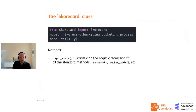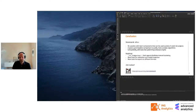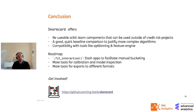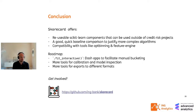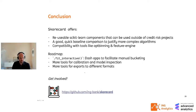To conclude: scorecard is open sourced, offers reusable scikit-learn components that are applicable outside of credit risk, and provides a really good baseline model. It's compatible with many other scikit-learn compatible tools. We have cool plans for the future including interactive Dash apps to do manual bucketing. We'd love for you to be involved — go check it out on scorecard's repository, let us know what you think, open issues if you find bugs or have ideas.